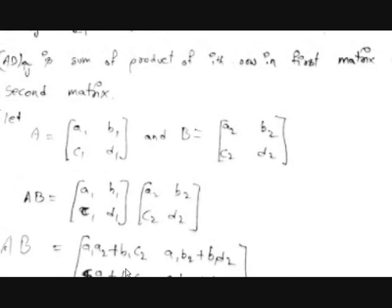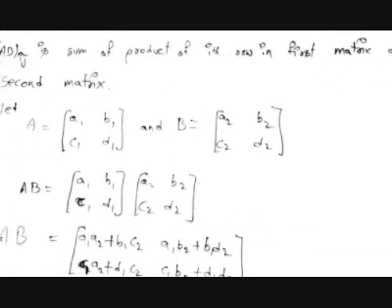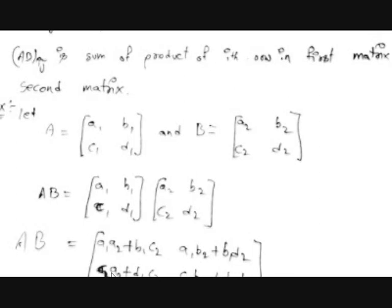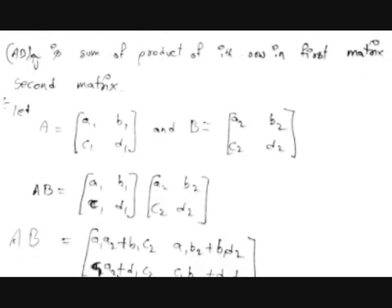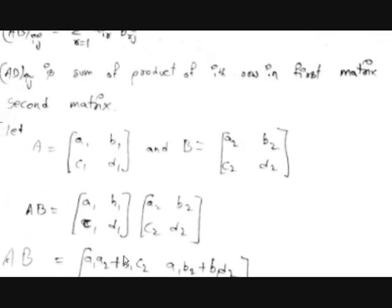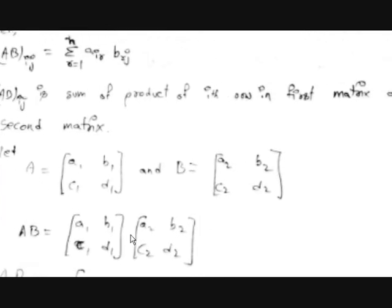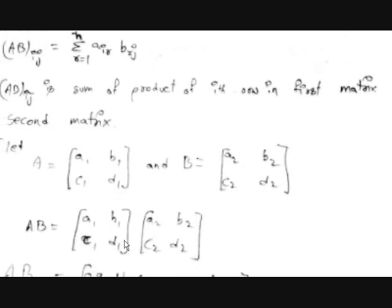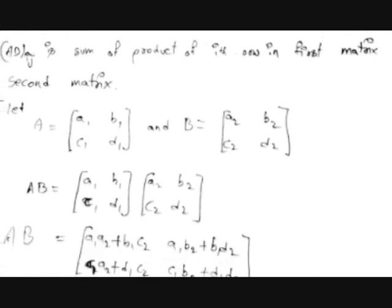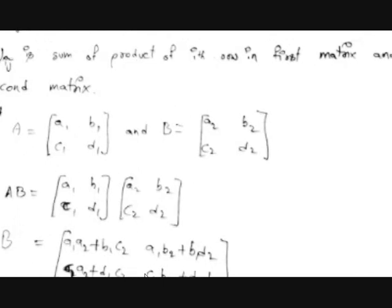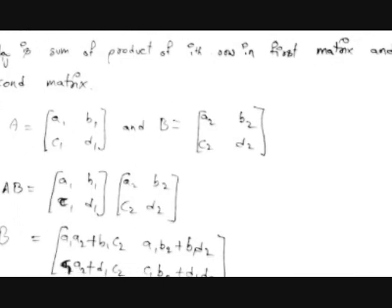For the first element in the second row, multiply the second row with the first column: C1·A2 + D1·C2. Similarly, the last element is C1·B2 + D1·D2. This is the multiplication of two matrices. Now let's see the properties of this multiplication.